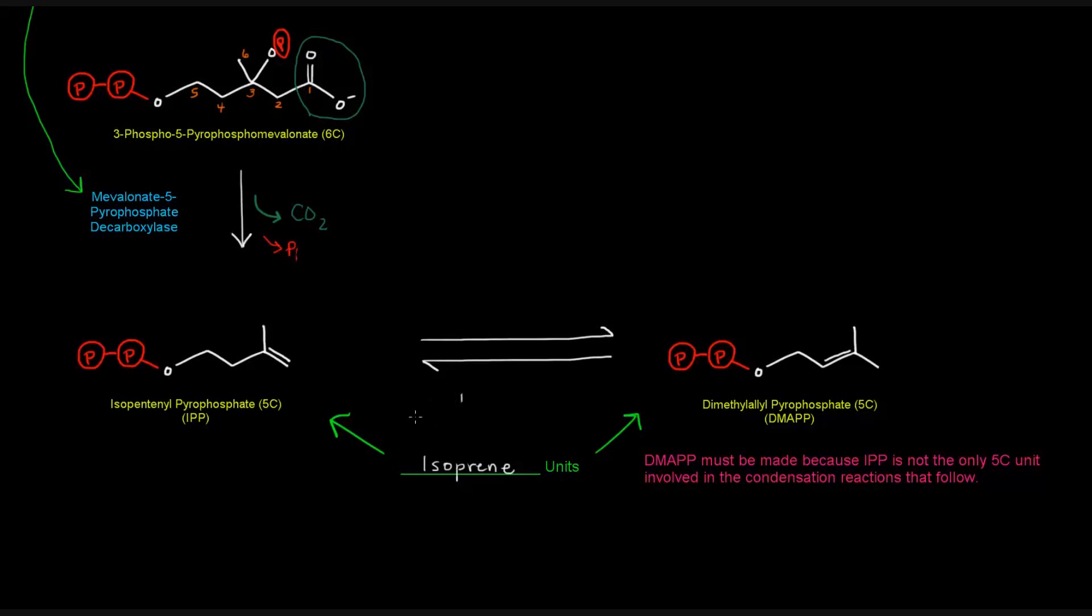So these guys are going to be our two different isoprene units. And isoprene, of course, looks like this. It's a 5-carbon unit that we're basically going to use to link together to make our squalene. And the reaction that isomerizes IPP to DMAPP is very cleverly named IPP isomerase. So once we have IPP and DMAPP, we can have the condensation reactions that follow to give us squalene in stage 3.